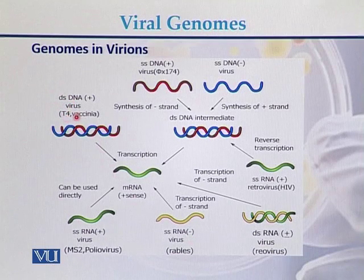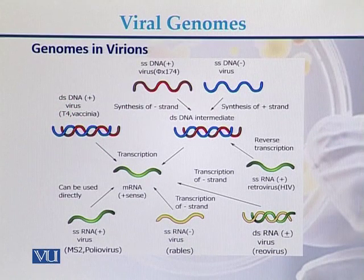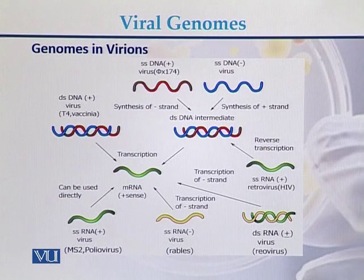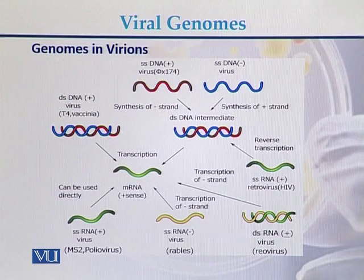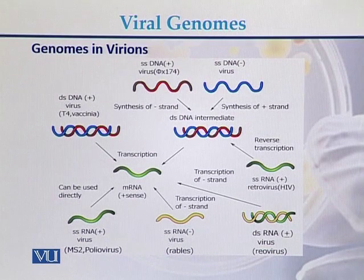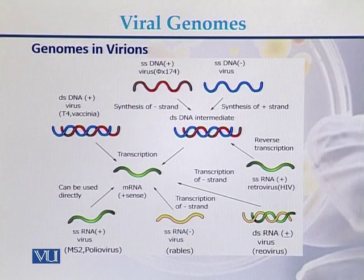An example is T4 vaccinia. In case of viral genomes, genomes are in the form of DNA or RNA. DNA can be single-stranded or double-stranded, and if the viral genome is RNA, it can be single-stranded — either a positive strand or a negative strand.